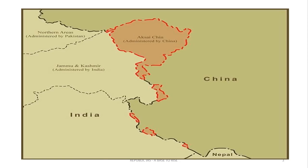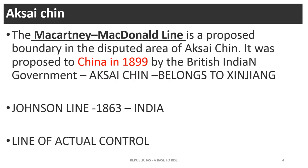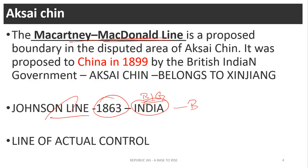When you come to Jammu and Kashmir, the border dispute is with respect to Aksai Chin. There are two lines: one is the Johnson line, and the second is the McCartney-McDonald line. The Johnson line was drawn in the year 1863 by the British India government. According to the Johnson line, the Aksai Chin region belongs to Jammu and Kashmir. Again in the year 1899, one more line was drawn by the British Indian government — the McCartney-McDonald line — according to which the Aksai Chin region belongs to Xinjiang province.